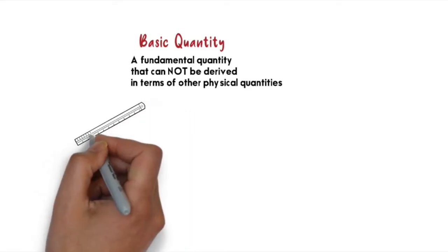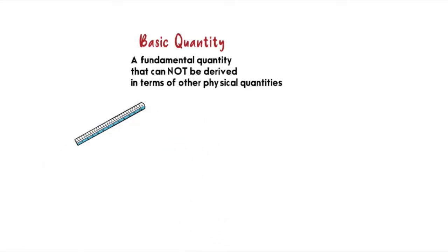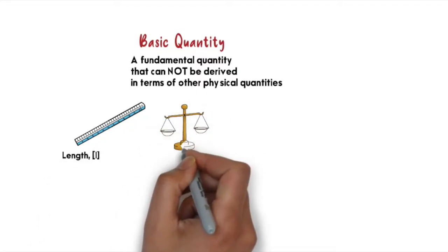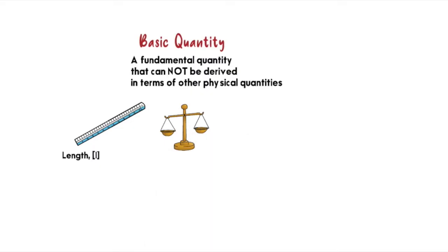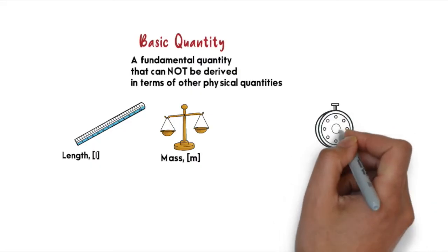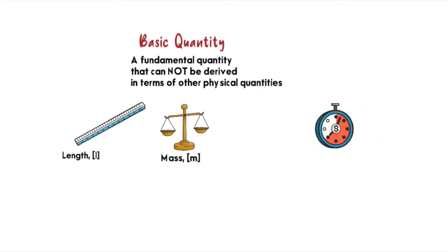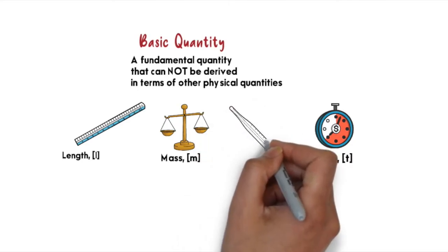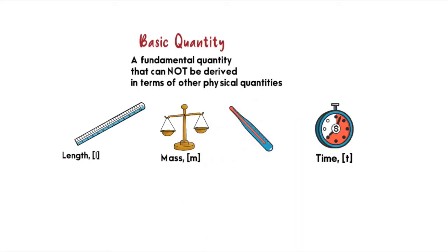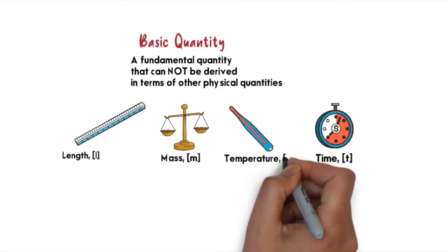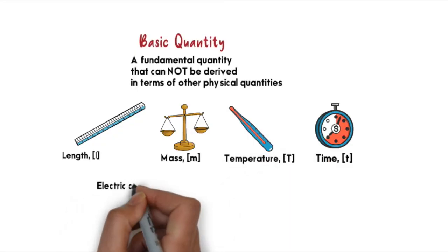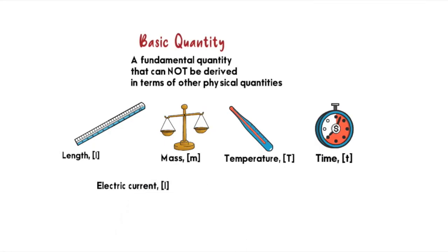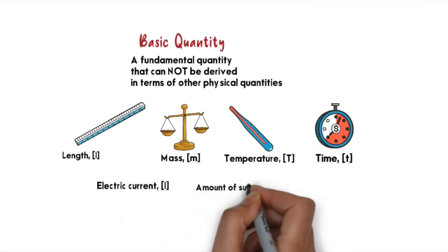In matriculation level there are six basic quantities that you need to remember. The first one is length, mass, time, temperature, electric current, and amount of substance.